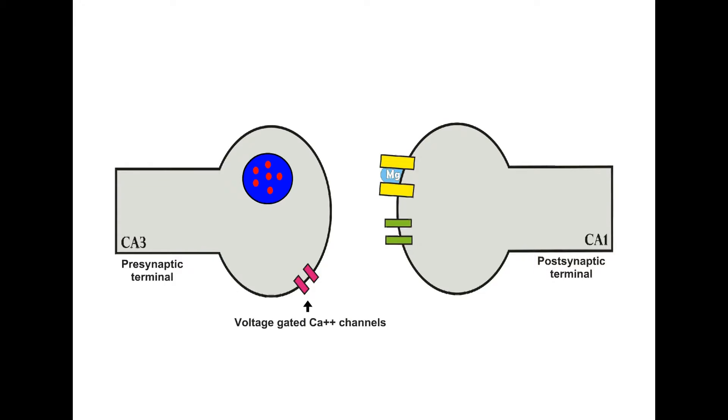CA3 presynaptic terminal have glutamate filled vesicles. Glutamate is an excitatory neurotransmitter. On the other hand, CA1 postsynaptic membrane has two types of glutamate receptors: AMPA receptors which are permeable only for sodium ions, and NMDA receptors which are permeable for both sodium and calcium ions, but at rest NMDA receptors are blocked by magnesium ion.